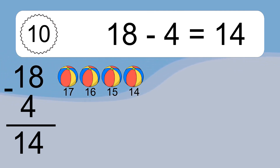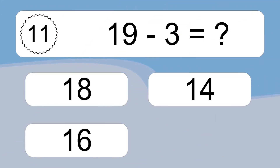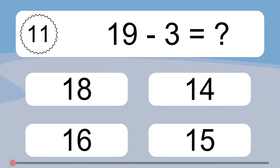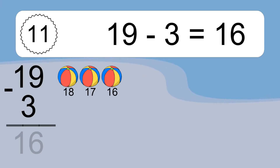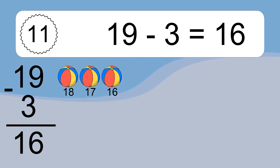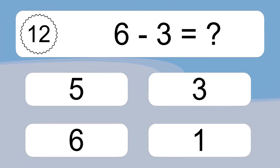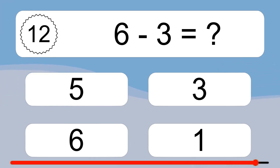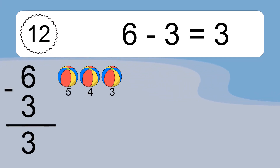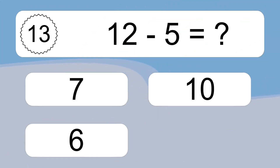17, 16, 15, 14. 19 minus 3 equals what? 6 minus 3 equals 16. Let's count it: 18, 17, 16. 6 minus 3 equals what? 6 minus 3 equals 3. Let's count it: 5, 4, 3. 12 minus 5 equals what?